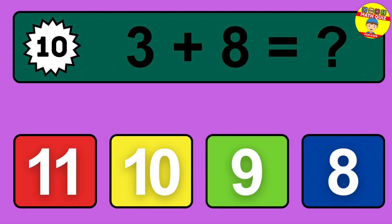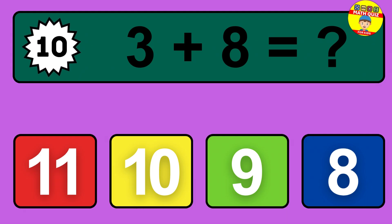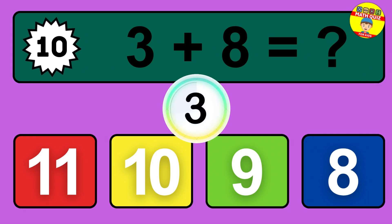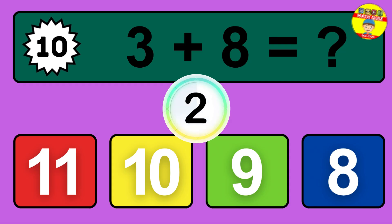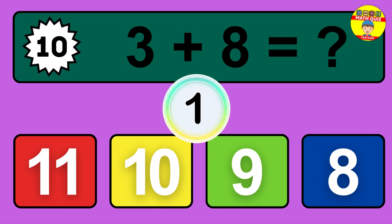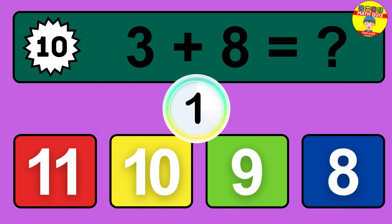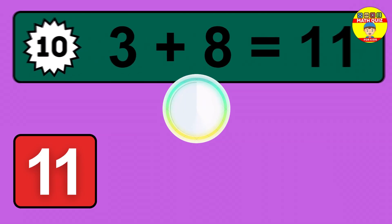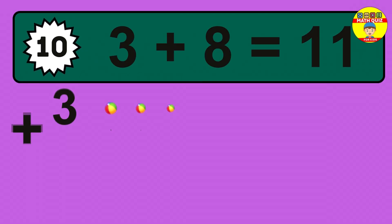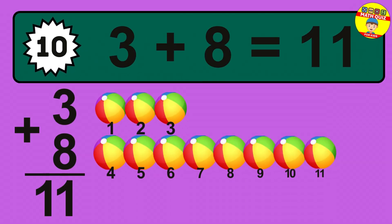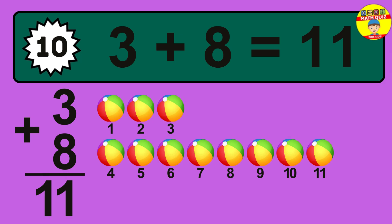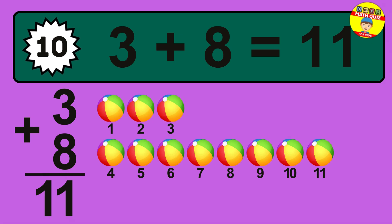Question 10. 3 plus 8 equals what? So the answer is 3 plus 8 is 11.